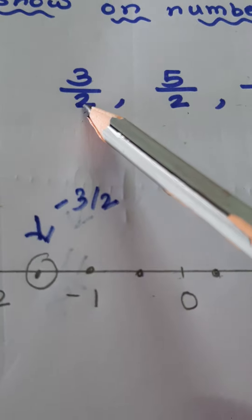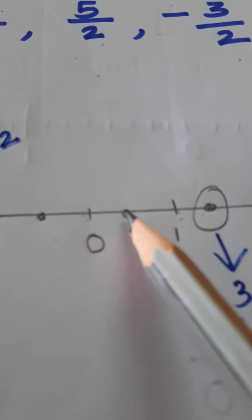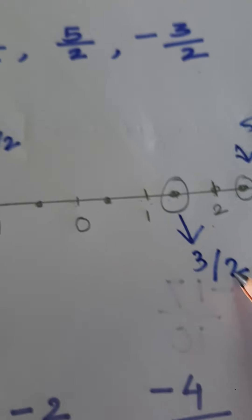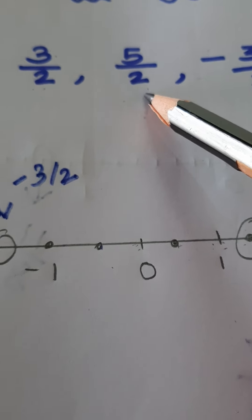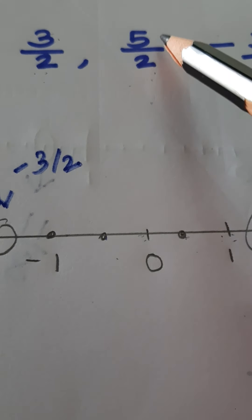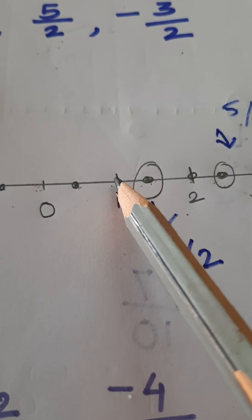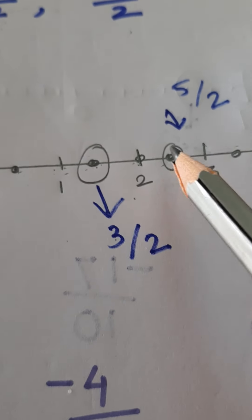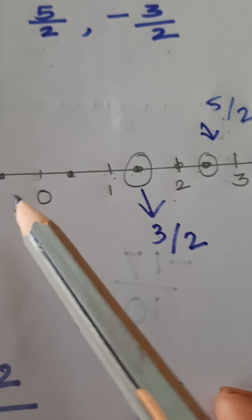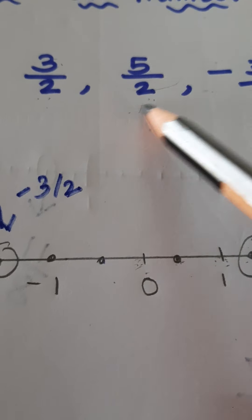We are to show 3 upon 2, then 5 upon 2. After 0, mark at the 5th part and you will get number 5 upon 2. Starting from 0, count the first, second, third, fourth, and fifth parts — so here you get the number 5 upon 2. Why? Because 2 is the denominator, meaning 2 equal parts between each pair of numbers: 0 to 1 — 2 parts, 1 to 2 — 2 parts.